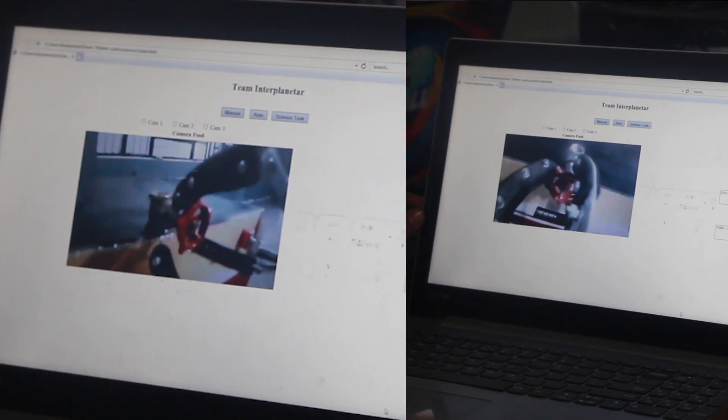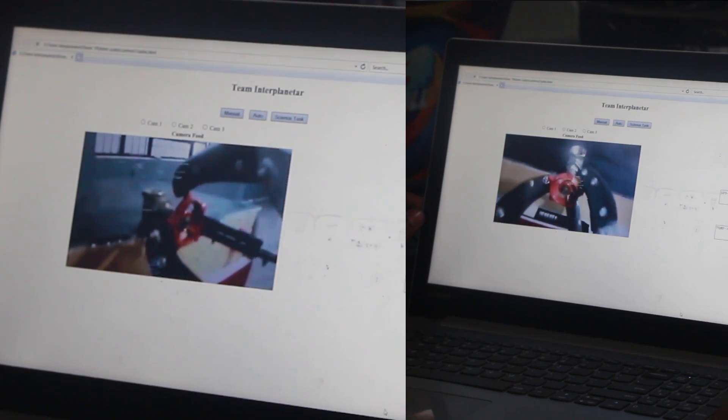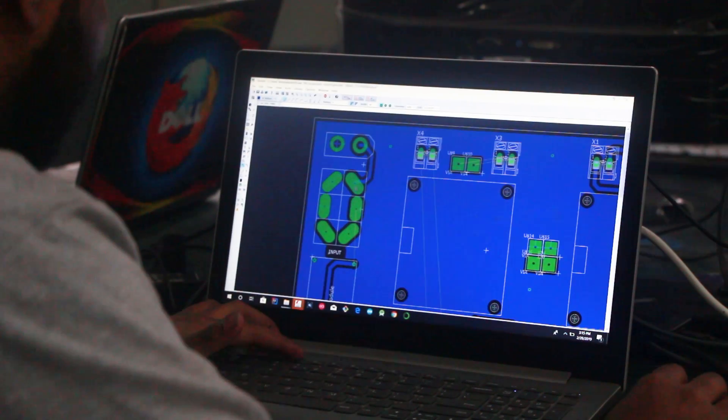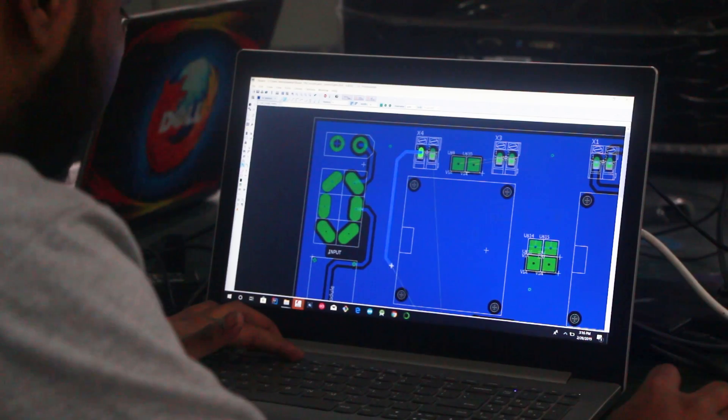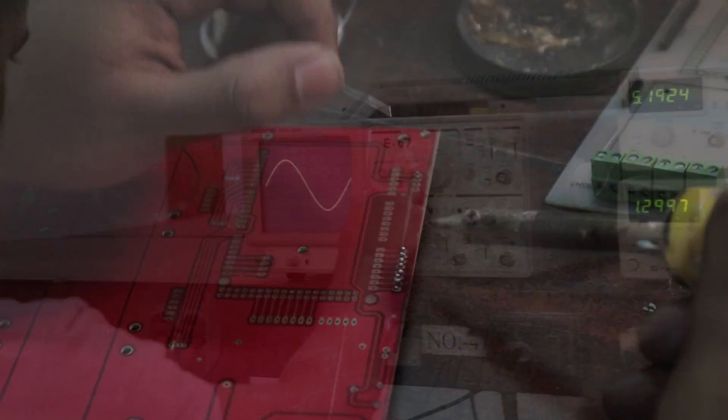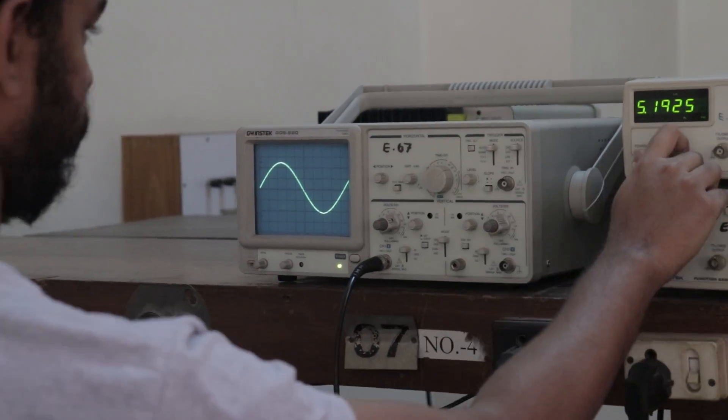We have used 4 cameras including 2 of them mounted on the end effector for better viewing angle while performing the tasks. We have made custom designed individual PCBs for wheel motors, the manipulator, communication devices and on-board science task.